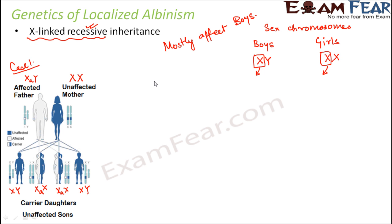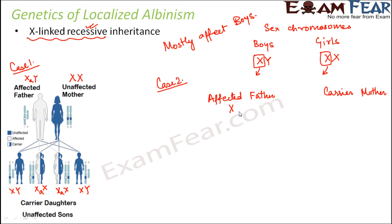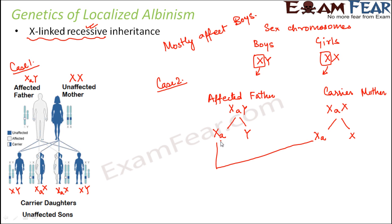Let us look at case number 2. In this case, the father is affected and the mother is a carrier — the mother is not affected but carries the albino gene. So the father is X-A, Y and the mother is X-A, X. The possible gametes from the father are X-A and Y; from the mother, X-A and X. Let us see the various possibilities for children.